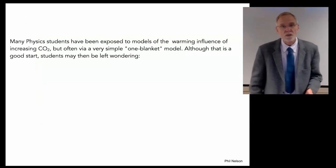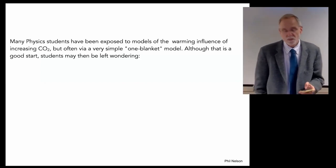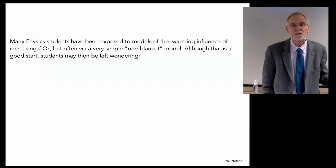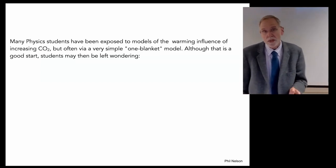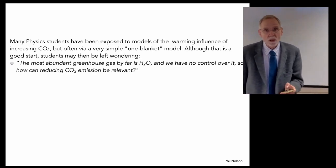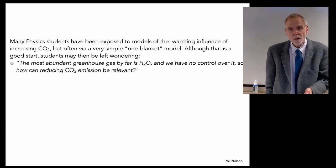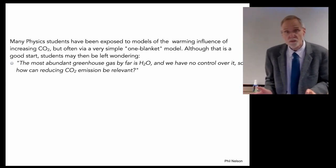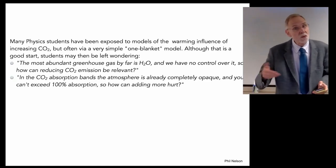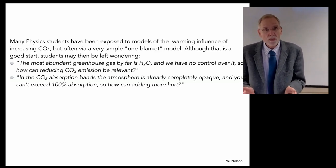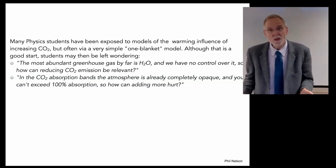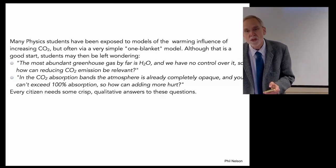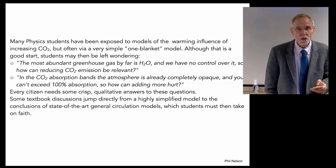Of course, many physics students have been exposed to models of the warming influence of increasing carbon dioxide, but often by a very simple model that I'm going to call one blanket. And it's a good start, but it leaves you kind of wondering about some questions that go way back, all the way to the very beginning of climate science. These are objections to the greenhouse theory right from the beginning, and you still hear them to this day. The first one says, the most abundant greenhouse gas by far is water, and we can't control that. So how can reducing carbon dioxide make any difference at all? It's a fair question, and it's one that deserves a good answer. And then a little bit more technical, in the carbon dioxide absorption bands, they're already completely opaque. So you can't get more than 100% absorption, so how could adding more carbon dioxide even matter? That's another good question that deserves an answer.